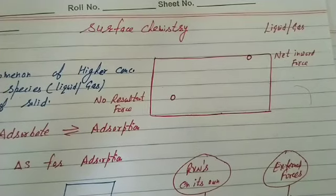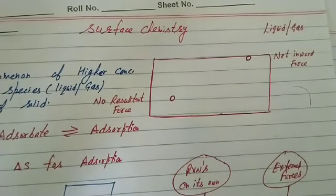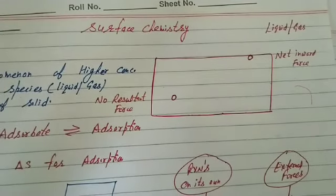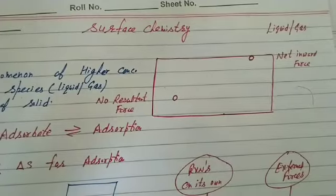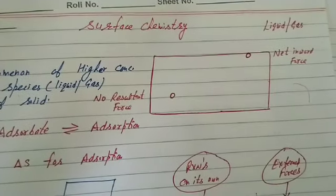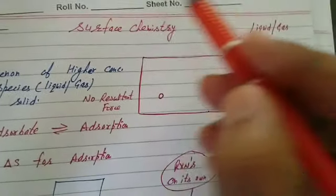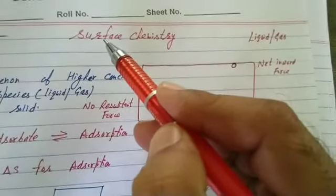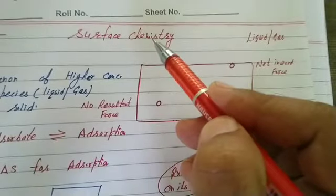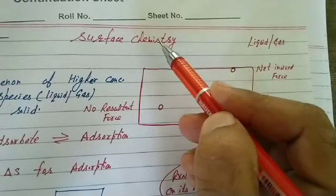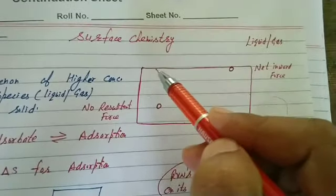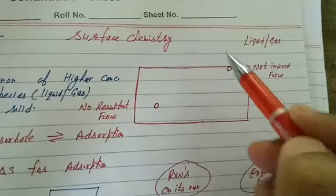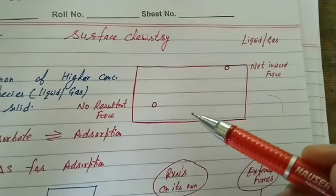Students, today we are going to start surface chemistry. As the name indicates — surface. What is surface chemistry? It is the branch of chemistry that deals with the nature of surfaces and changes occurring on the surface.